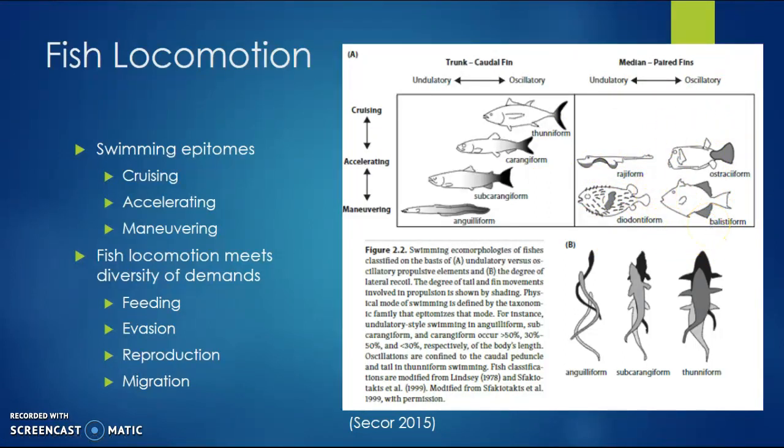Fish locomotion meets the diversity of demands within the fish, such as feeding. Organisms like tuna need to be able to swim very fast in order to feed. Other demands include evasion of predators, which is common in coral reef systems, as well as reproduction and migration.